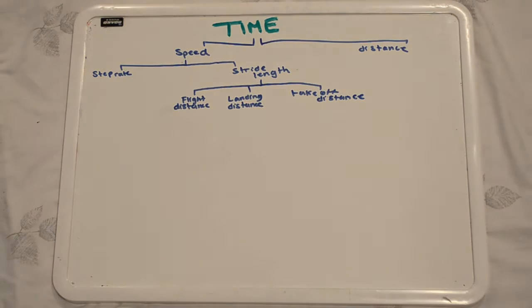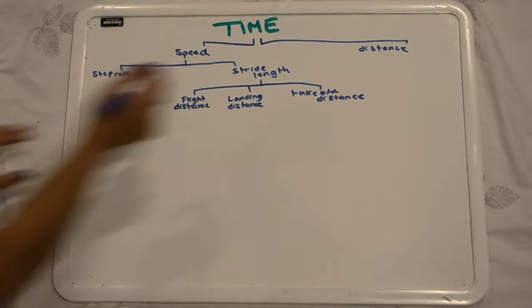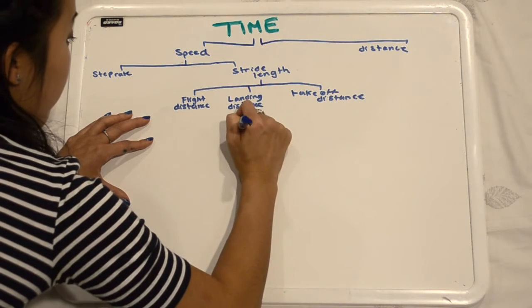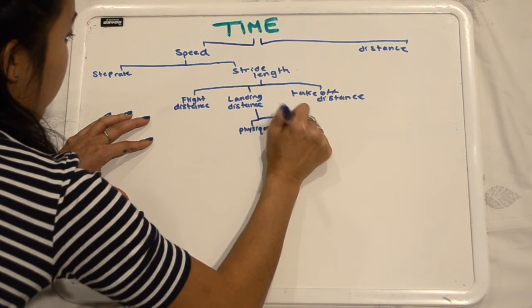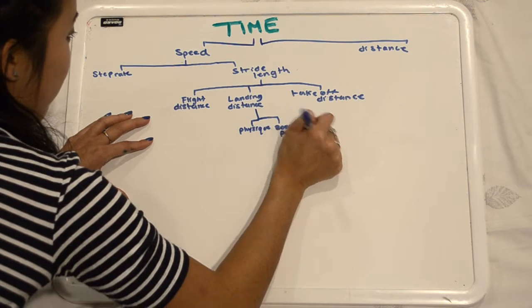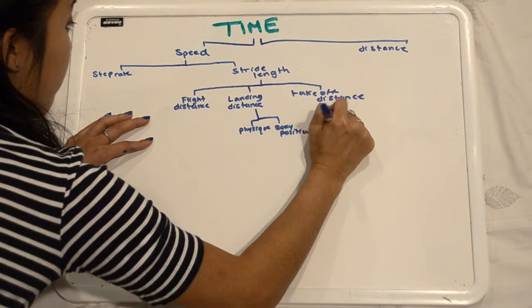We can now move further down the diagram and look at takeoff distance and flight distance. For both of these variables, it's apparent that they can be modified by strength, range of motion, and body position of the individual. We can use the term physique to mean strength and body position.